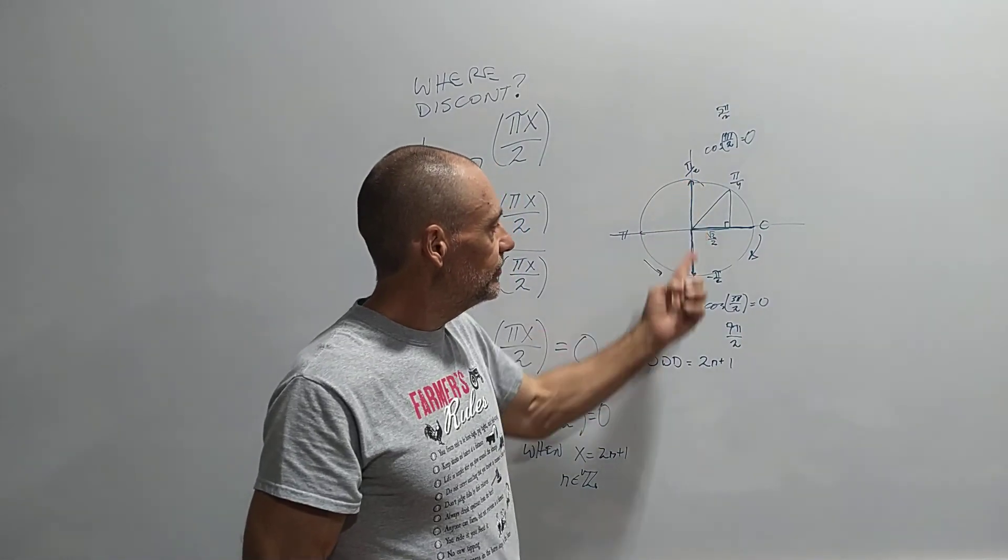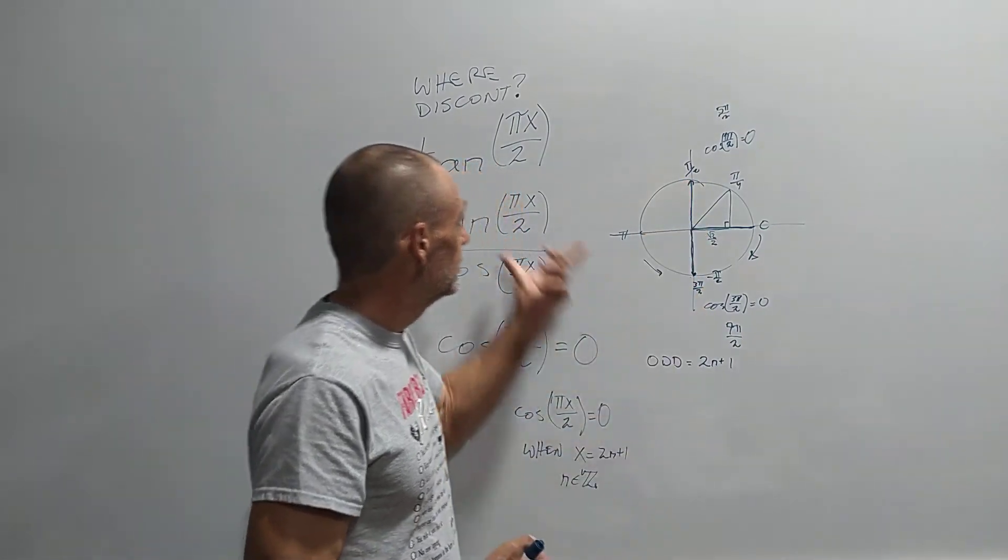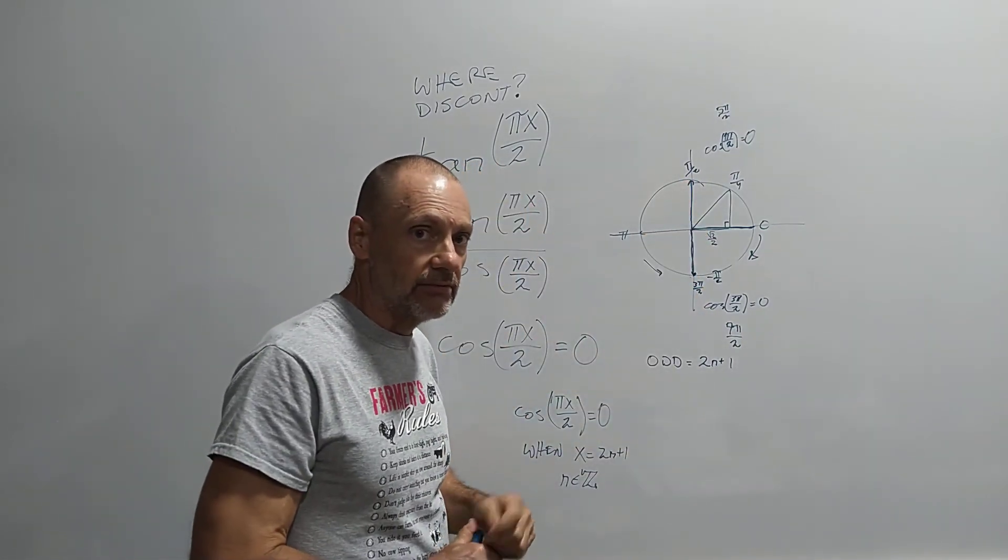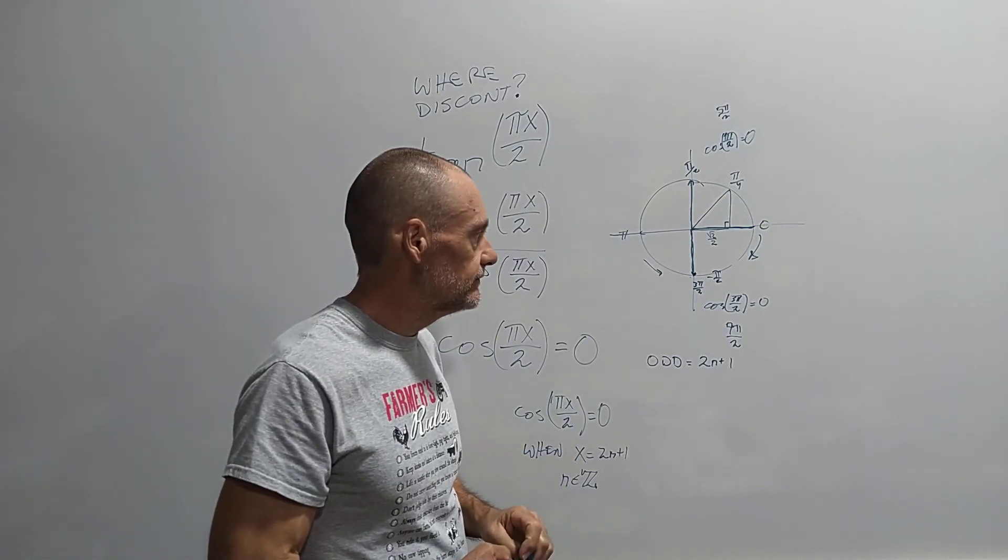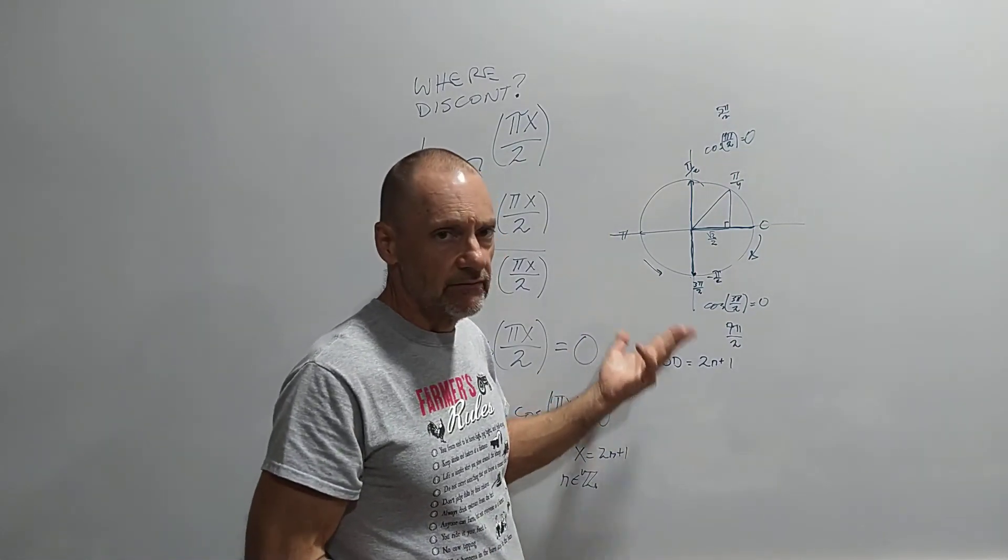So these are the two places on the unit circle where this thing has a problem, right, that fails to exist. Tangent has vertical asymptotes.